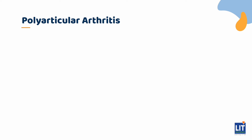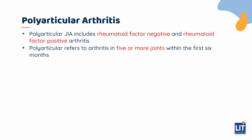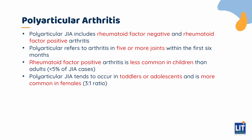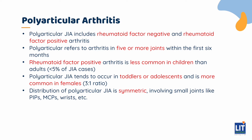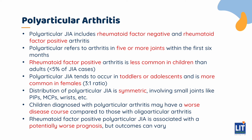The next type is polyarticular arthritis, which includes both rheumatoid factor negative and rheumatoid factor positive arthritis. Poly refers to 5 or more joints with arthritis occurring in the first 6 months. RF positive arthritis is not as common in children as in adults; less than 5% of all kids with JIA actually have rheumatoid factor positive arthritis. Polyarthritis tends to occur in the toddler or adolescent age group and is more common in females with a ratio of 3 to 1. The distribution is more symmetric, involving small joints such as PIPs, MCPs, and wrists. Children with polyarticular arthritis generally have a worse course than those with oligoarticular, with RF positive being even worse.